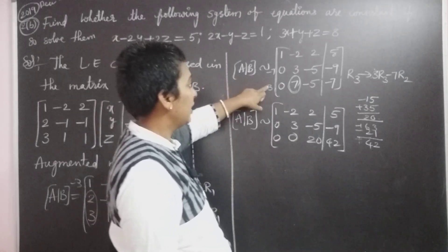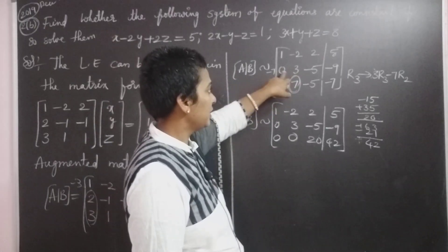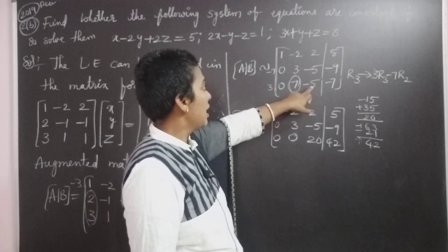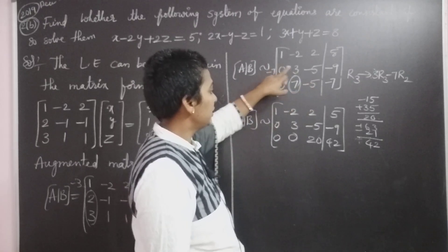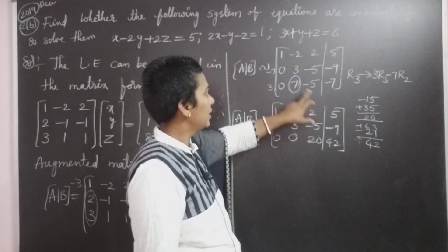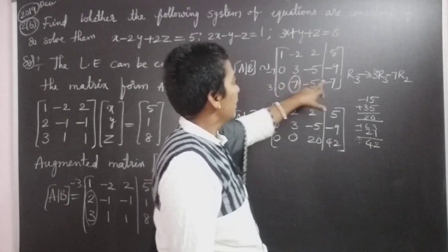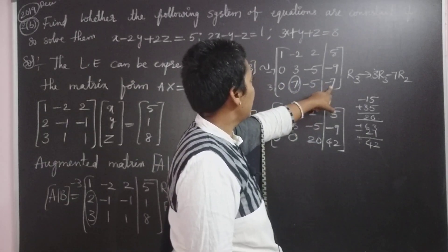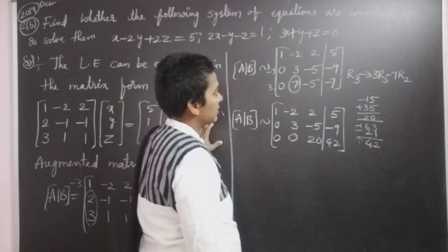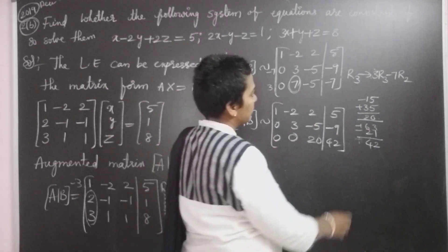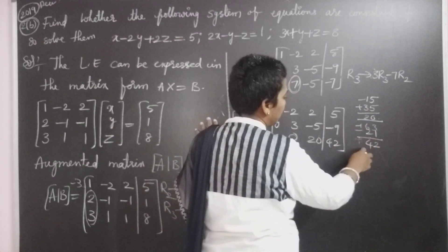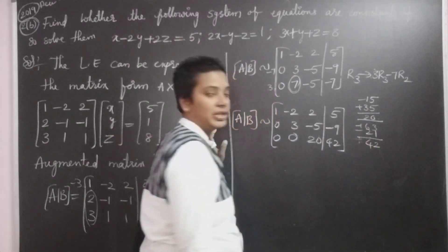Confirming the third row calculation: 7×3 − 21 = 0; −15 + 35 = 20; −21 + 63 = 42. So the echelon form of [A|B] is: first row 1, −2, 2, 5; second row 0, 3, −5, −9; third row 0, 0, 20, 42.